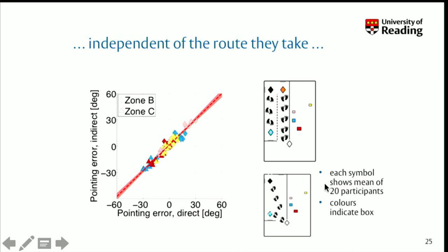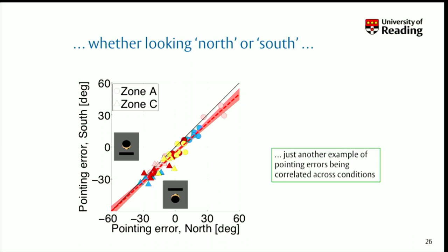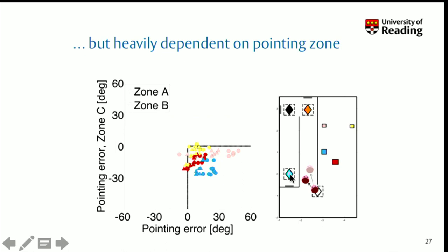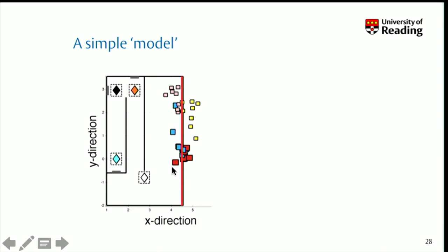Here are two conditions: walking via an indirect route plotted on one axis, compared to walking via a direct route on the other axis — remarkably consistent, but big errors, across means of 20 participants. Here are the raw data: colors indicate the boxes, and the shape indicates the pointing zone — triangle for zone C, diamond for zone B. All the zone B errors are of one type, and all the zone C errors of the other type, which is what I showed you earlier — they were all to the north.